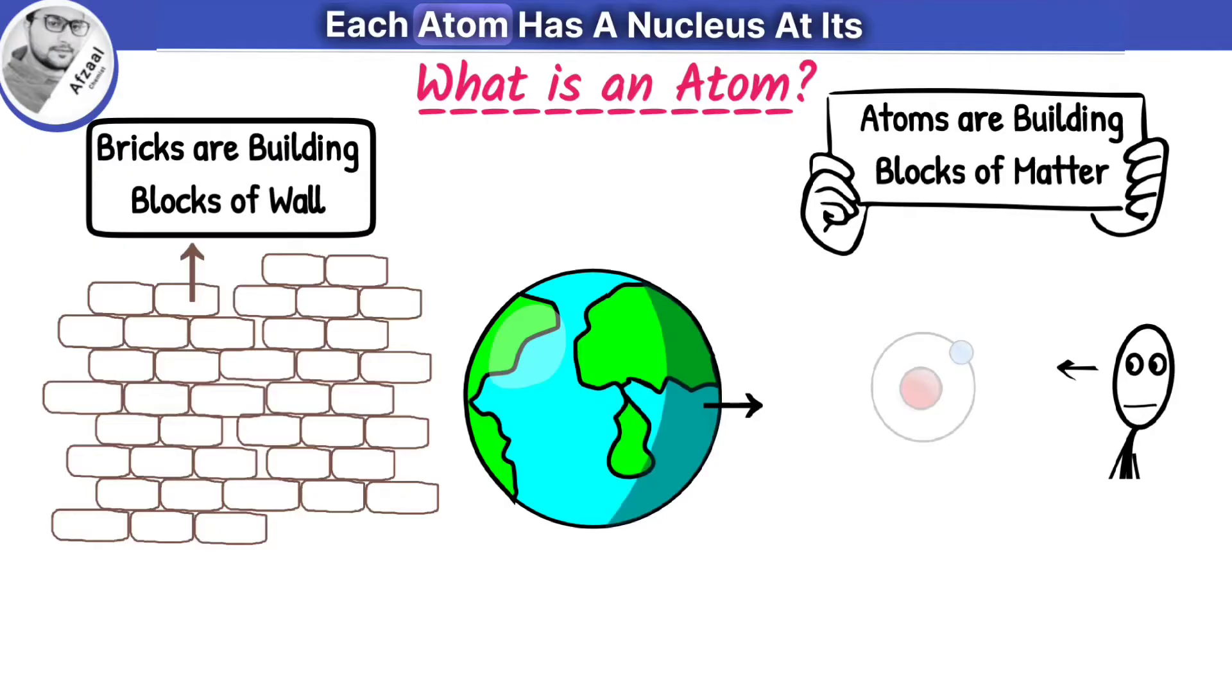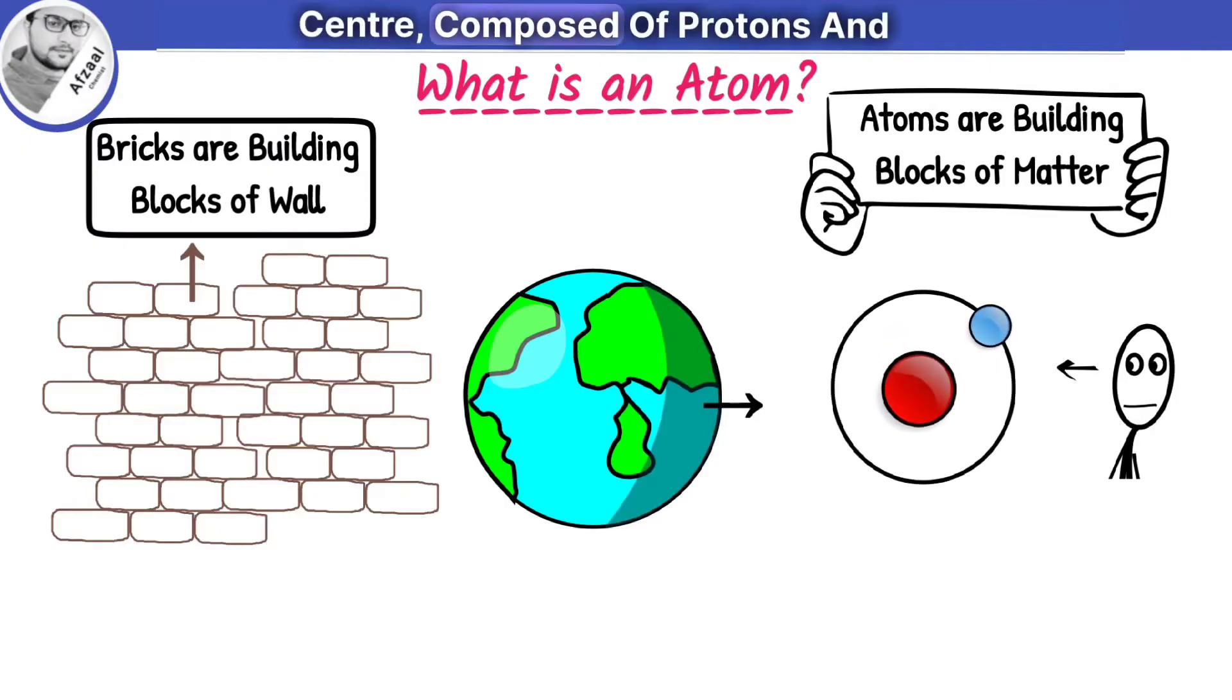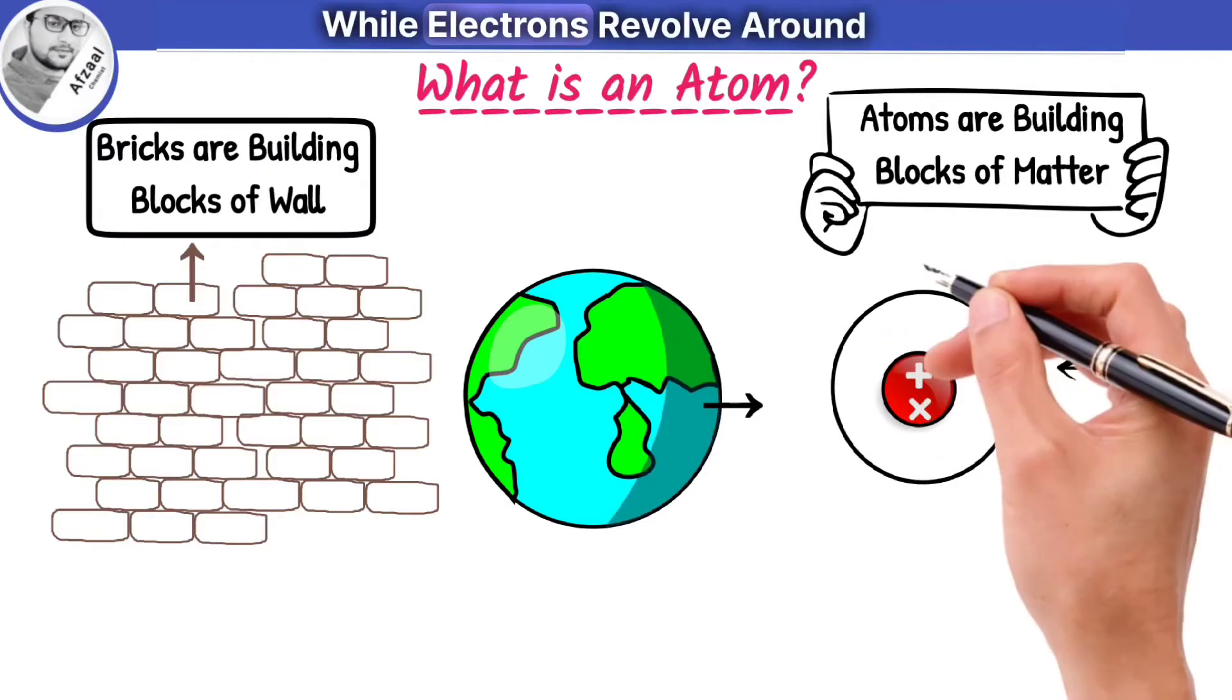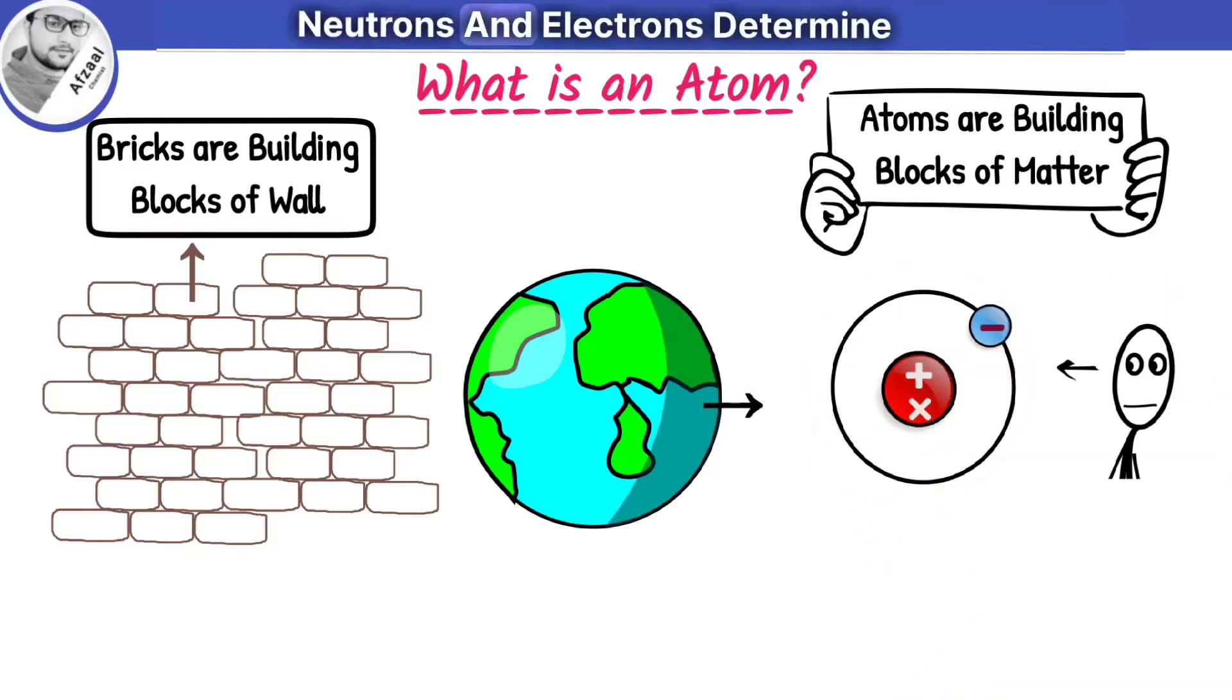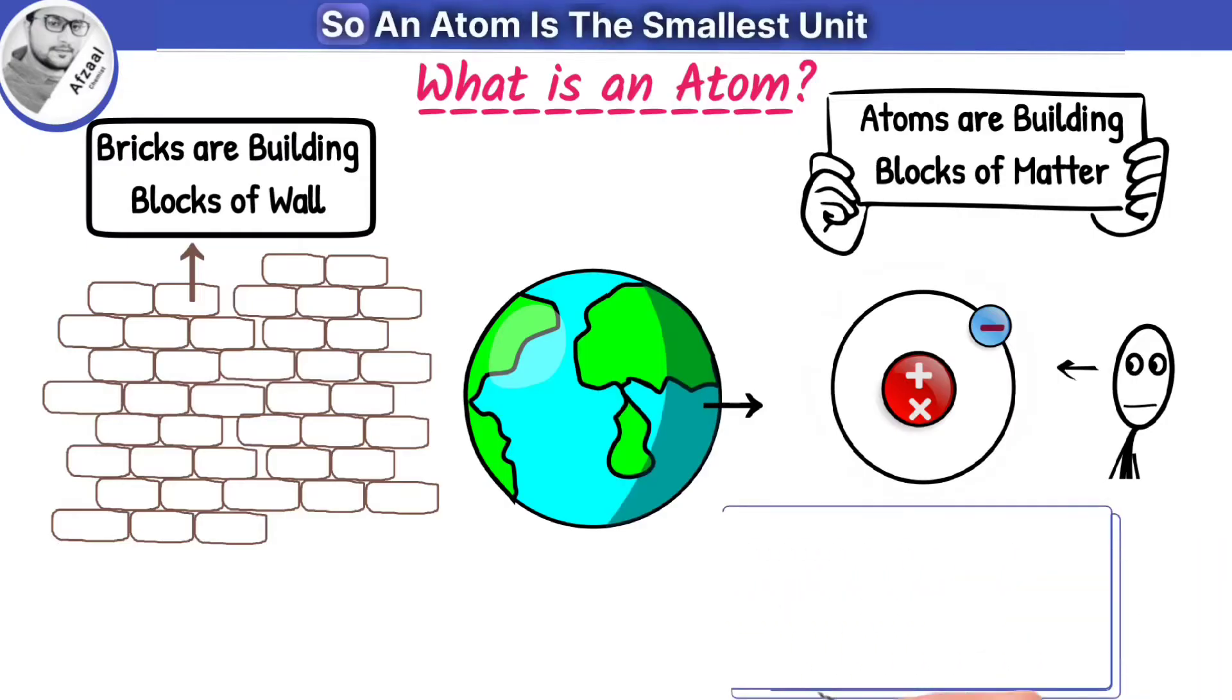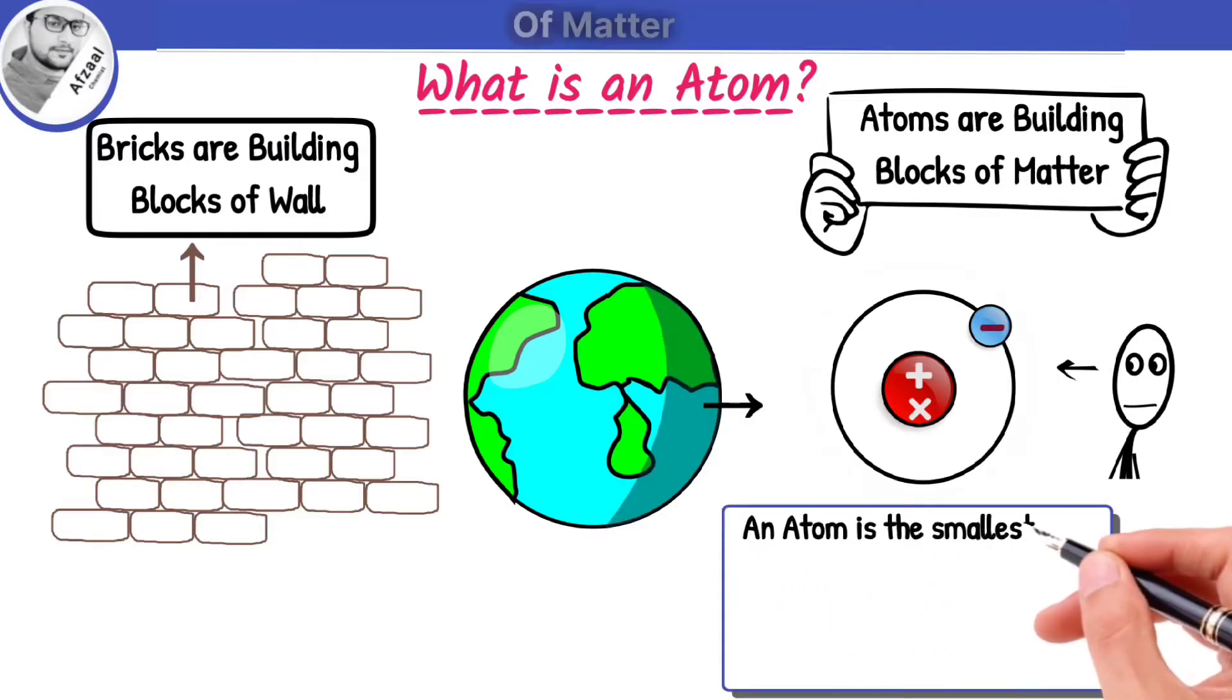Now let's take a closer look at these atoms. Each atom has a nucleus at its center composed of protons and neutrons, while electrons revolve around it. These protons, neutrons, and electrons determine the characteristics of an atom.